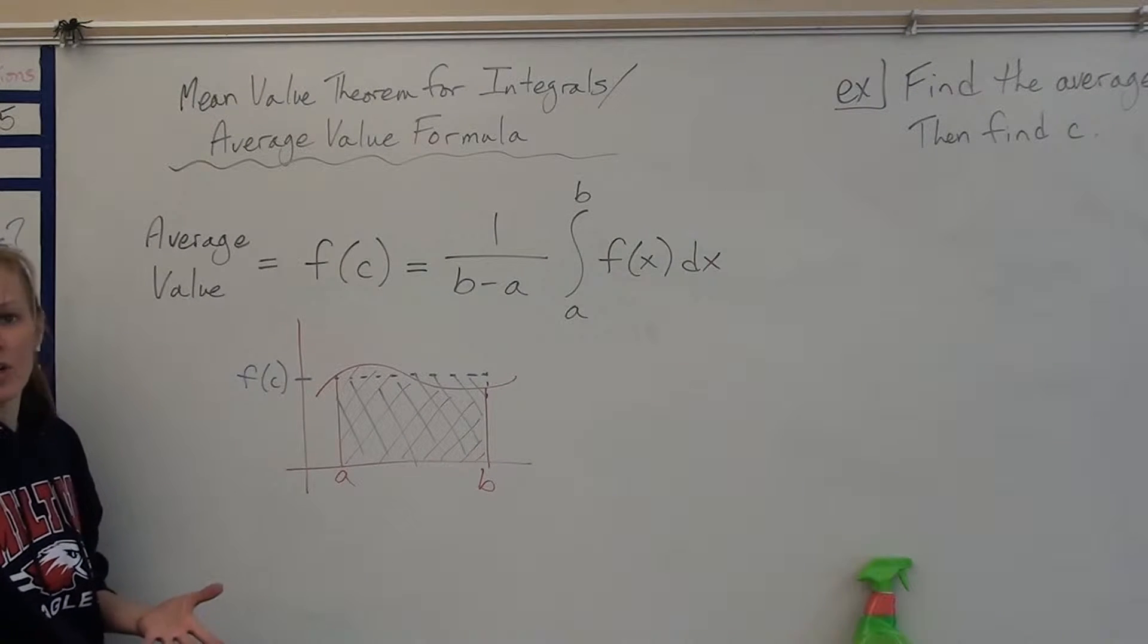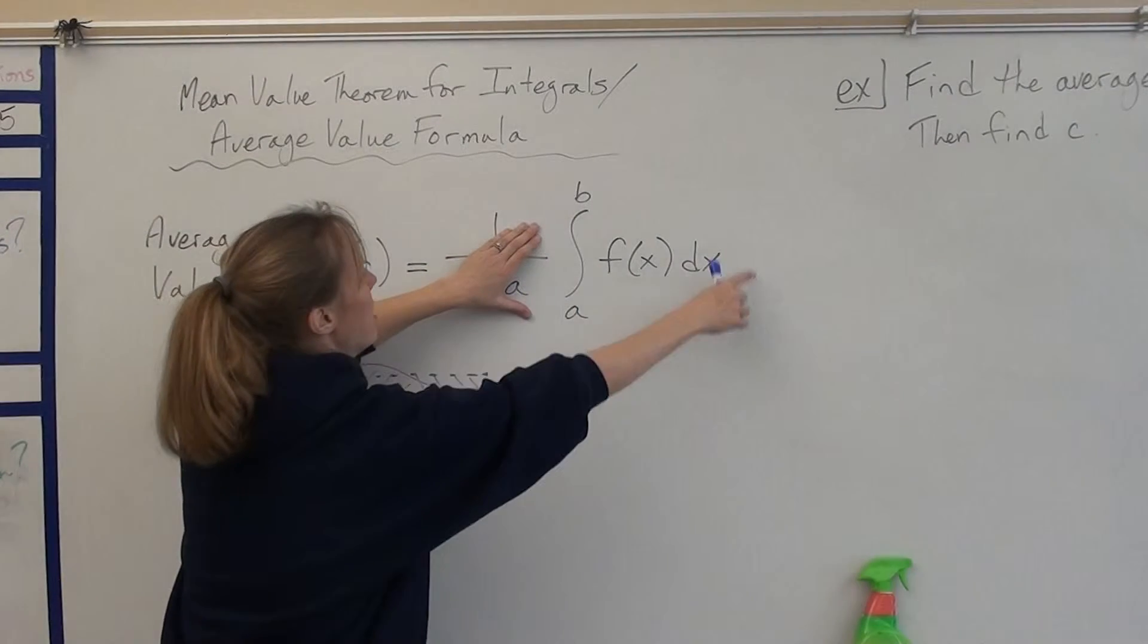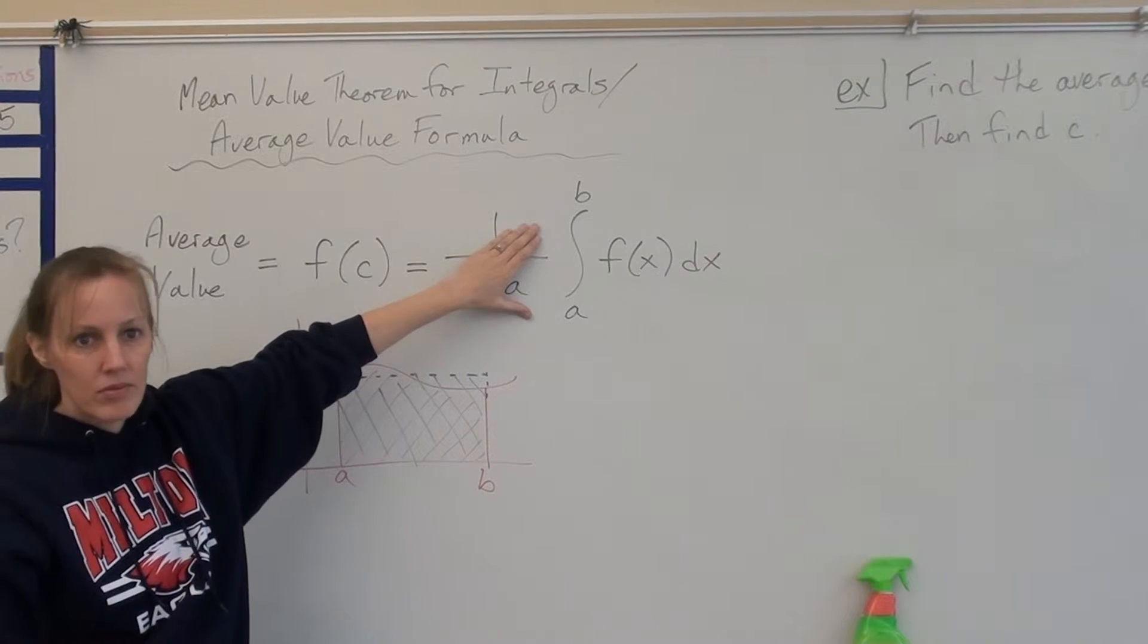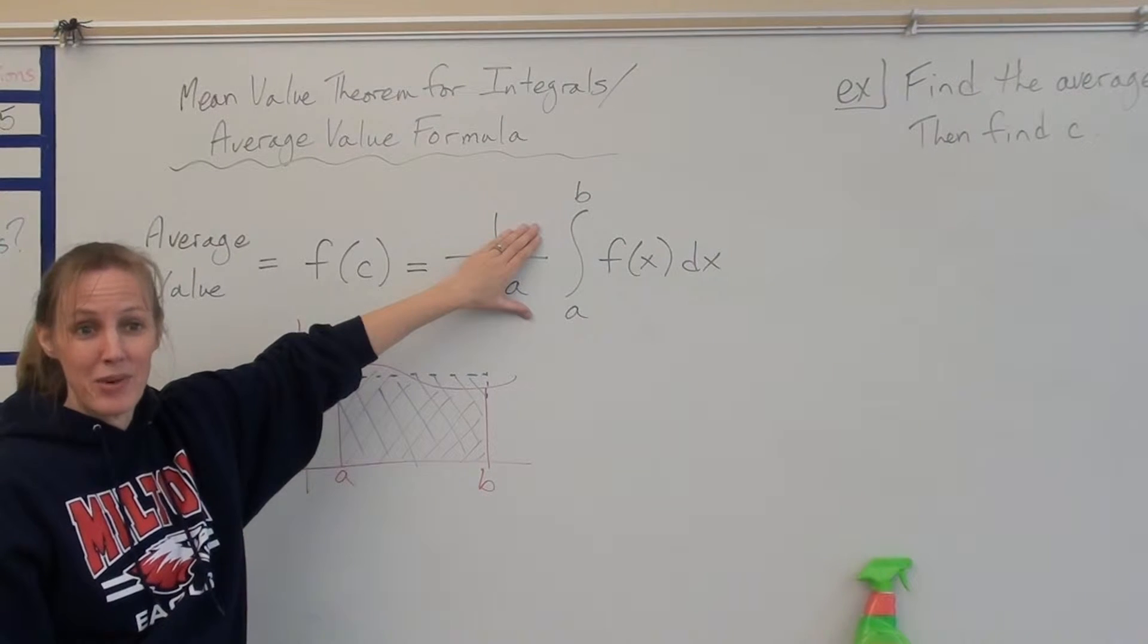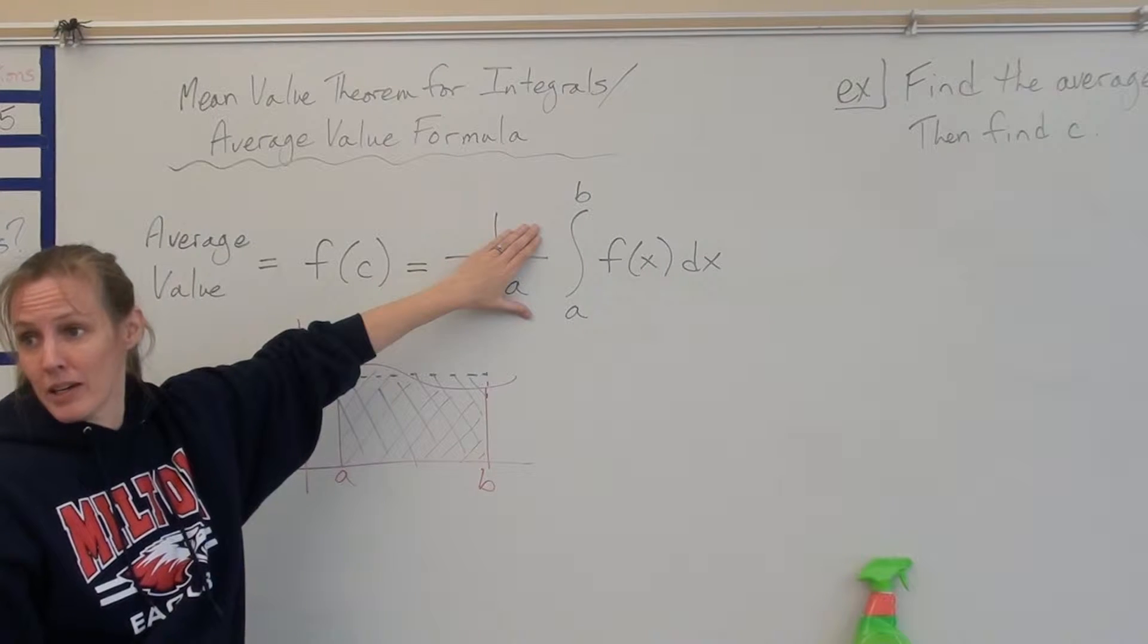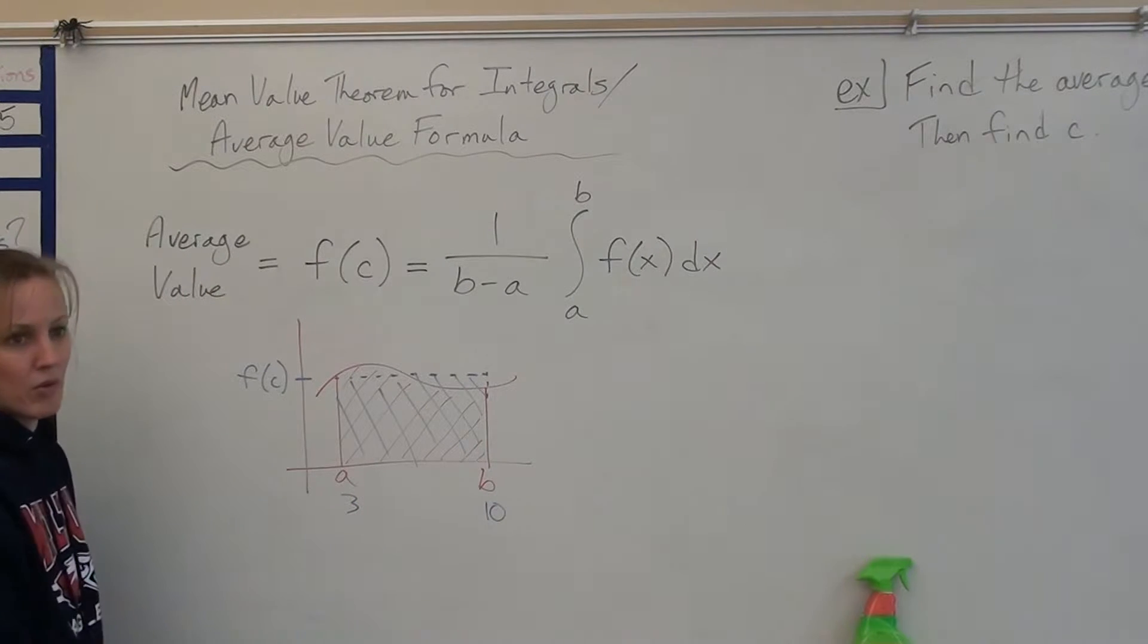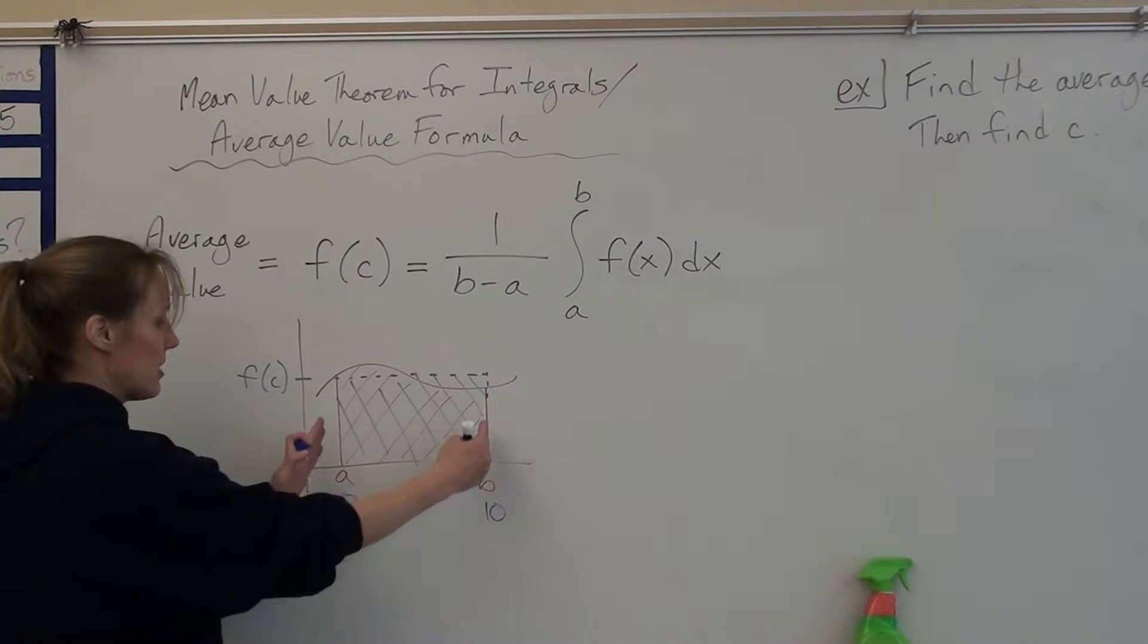Now, how does that work? Well, if you think about it, what does the integral from a to b of f of x give you? Area under the curve, right? From a to b. The integral from a to b of f of x gives you the area under the curve from a to b. This b minus a - say b is like 10 and a is 3, so b minus a would be 7. What is that? That's the width. That's the width of your interval, that's this width.